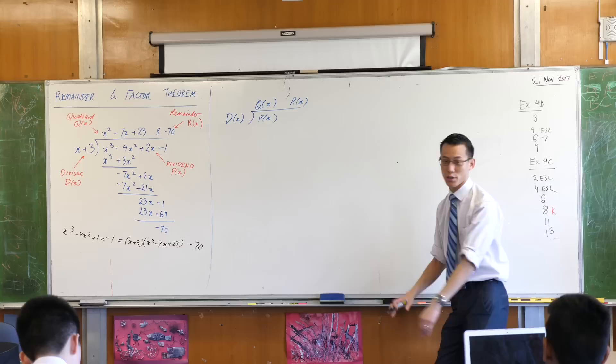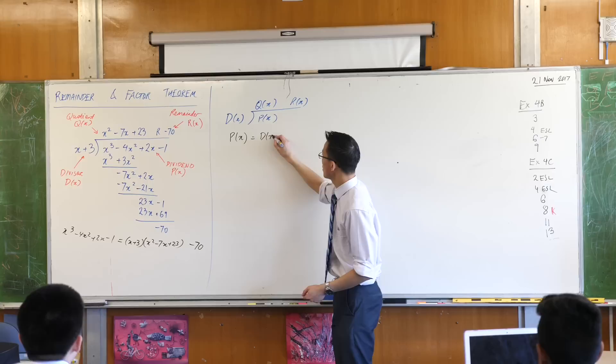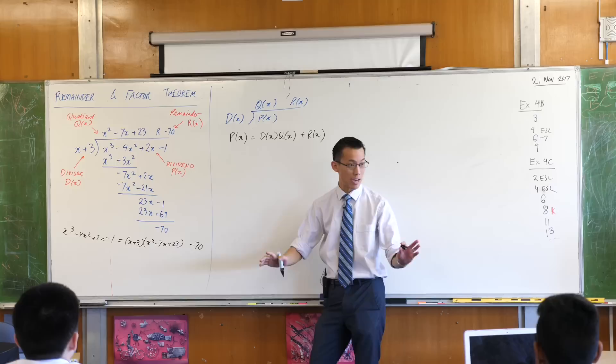So I can state that in general terms for any polynomials being divided in the following way. The original polynomial P equals the divisor times the quotient plus the remainder. Is that okay? Divisor, quotient, remainder. All happy?